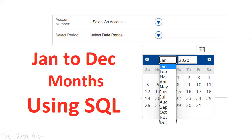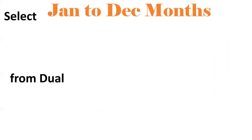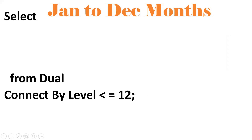Our requirement is to print January to December — that is, 12 months — using SQL. This is used, for example, when you open a bank statement and want to get a particular month's transaction by clicking on that month. We need to generate these months using SQL. I am using 12 because from January to December we have 12 months, so CONNECT BY LEVEL is used to loop and iterate 12 times.